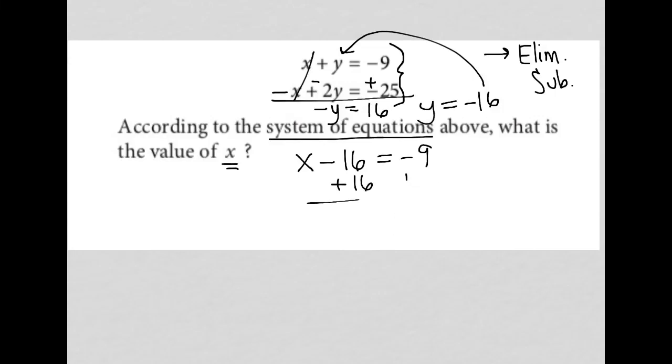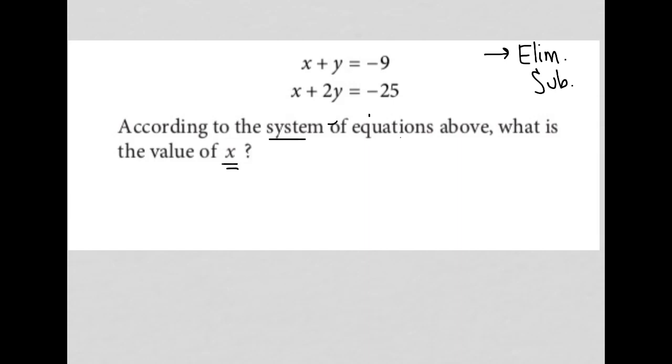I'm going to erase this and do it a different way. You could also use elimination and say, well, because the question is asking for x, why don't I just eliminate y instead? I could do that by multiplying the entire first equation by negative 2.